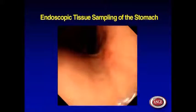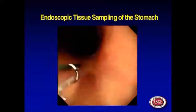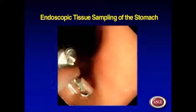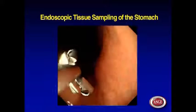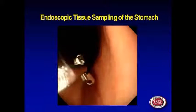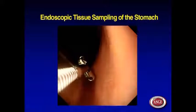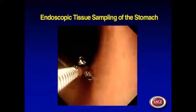For lesions near or on the cardia, the scope should be J-turned and withdrawn slowly to approach the target lesion.